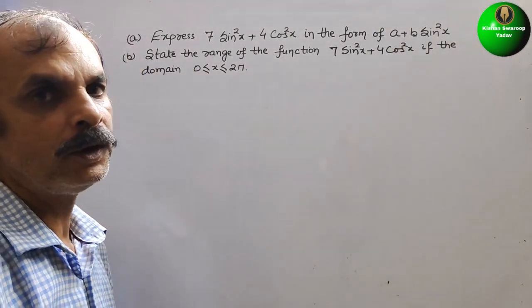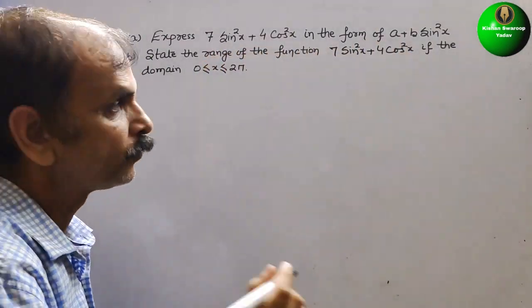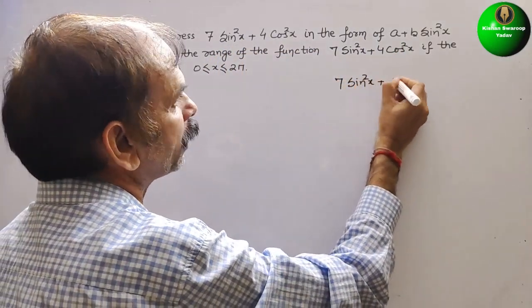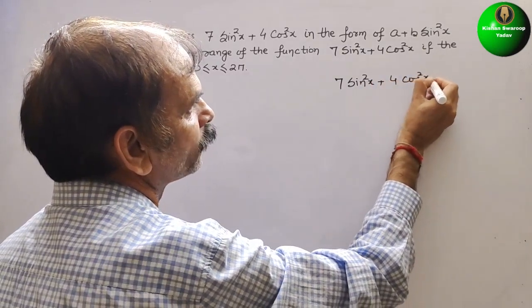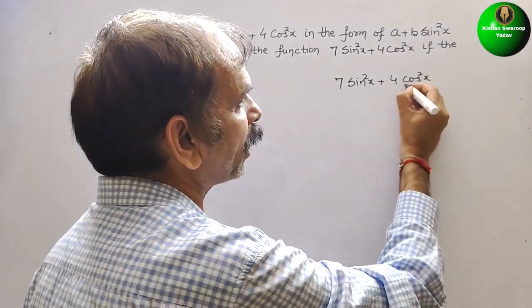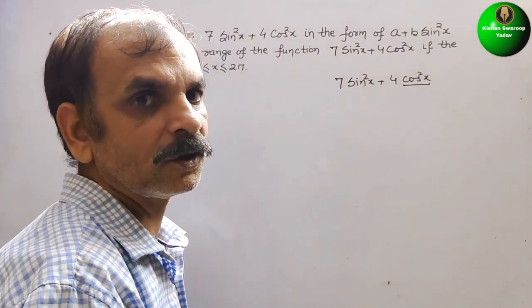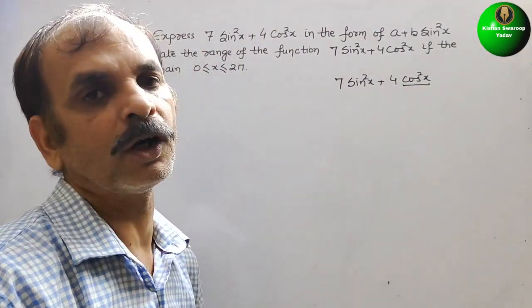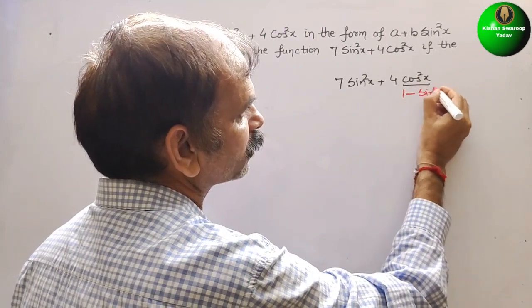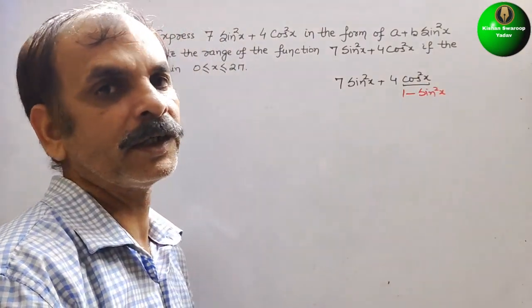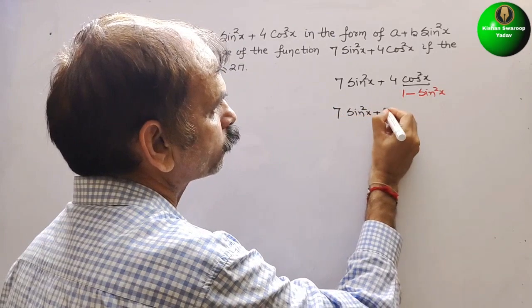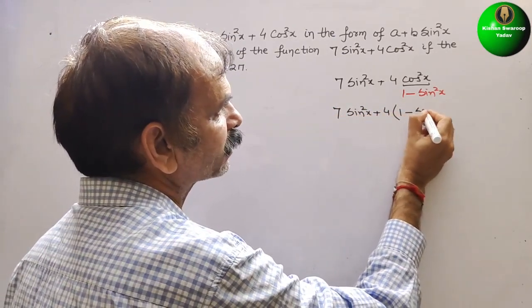First, we have to convert the expression into the required form. We are given 7sin²x + 4cos²x. Since the target form has no cosine term, we need to convert cos²x using the identity: cos²x = 1 - sin²x. So we write: 7sin²x + 4(1 - sin²x).